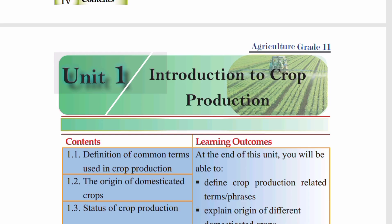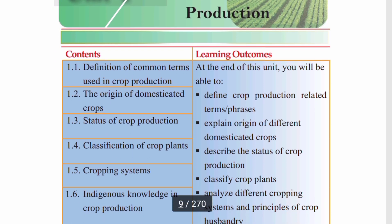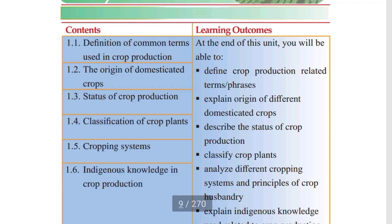Introduction to Crop Production. The contents and learning outcomes are as follows: 1.1 Definition of common terms used in crop production, 1.2 The origin of domesticated crops, 1.3 Status.